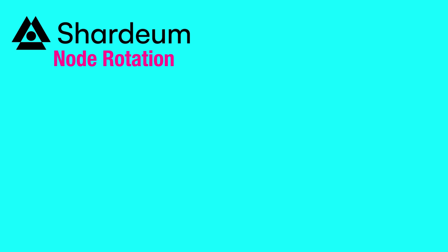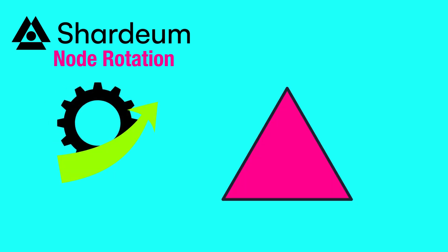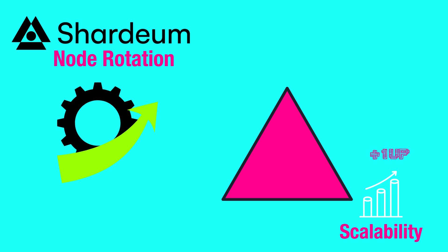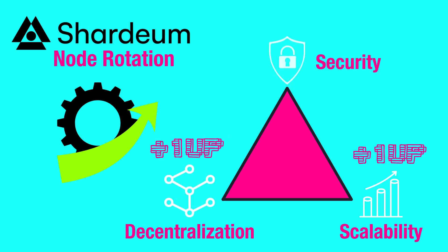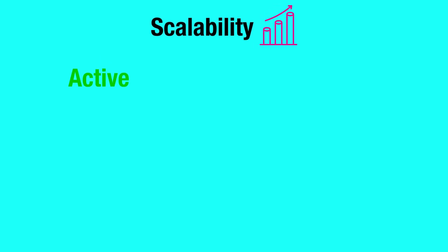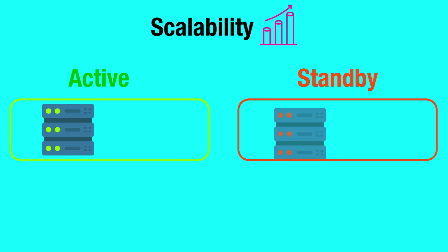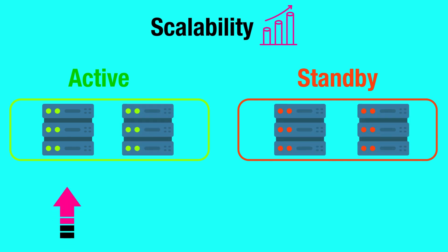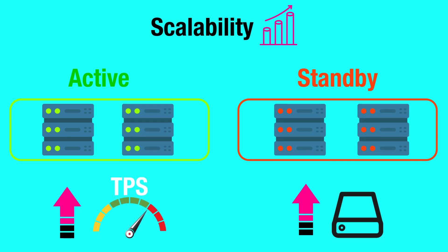So why does Shardium use node rotation? It's because it enhances the triad of three key properties: scalability, decentralization, and security. Firstly, it helps increase Shardium's scalability. Shardium requires active and standby nodes to join the network and increase the TPS and storage of the network via its auto-scaling design. Having standby nodes ensures a ready supply of nodes that can be rotated in to increase Shardium's ability to handle increases in TPS.